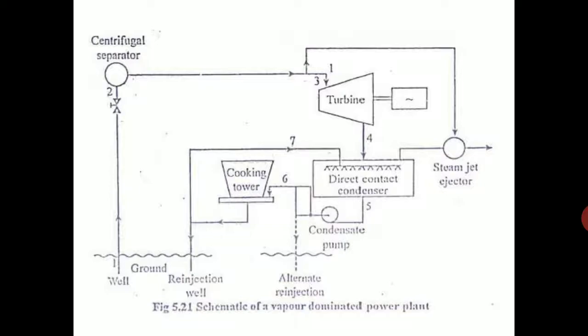The low pressure vapor comes to the condenser where it is condensed. There is a direct contact condenser. It can be pumped back to the re-injection well.